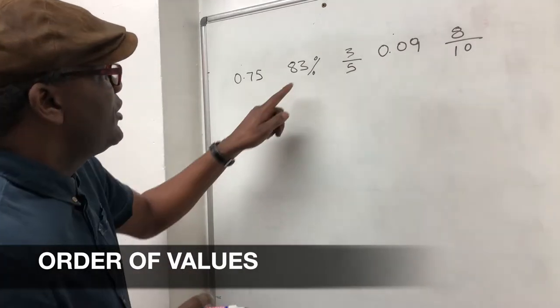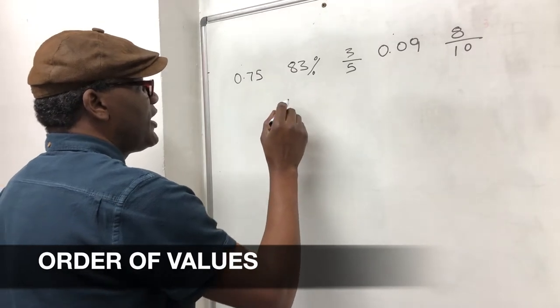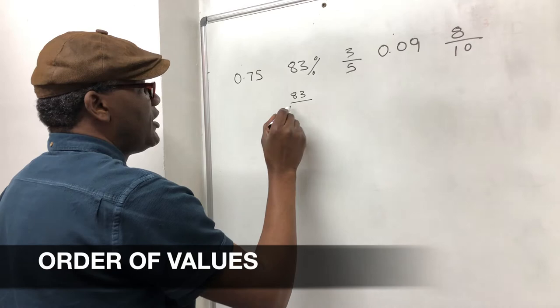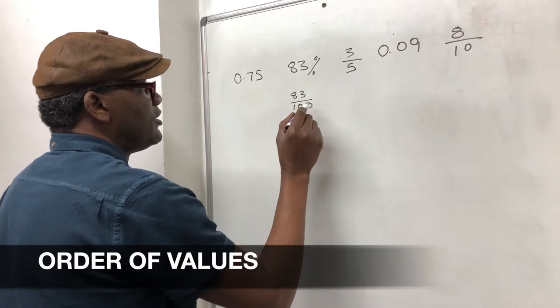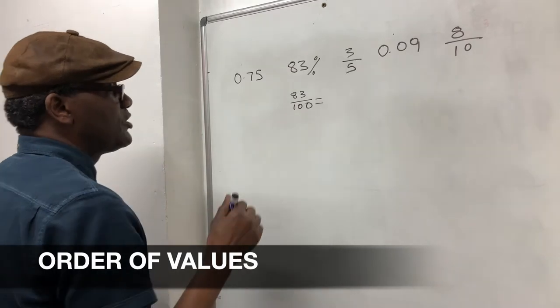So if we look at 83%, the way to convert that, if you say 83 over 100, which is equal to, and I'm going to do it really slow so that you get to understand this.